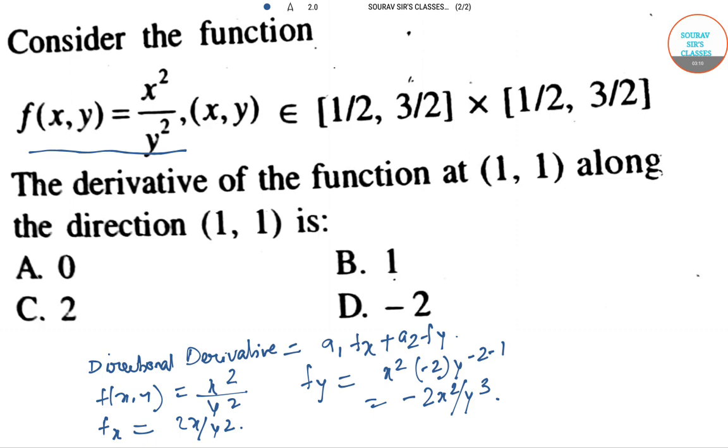Substituting into the formula: 1·fₓ + 1·fᵧ = fₓ + fᵧ = 2x/y² - 2x²/y³. Putting x=1 and y=1, we get 2 - 2 = 0. Hence option A is correct.